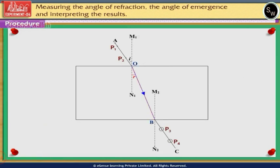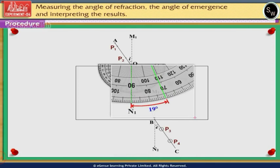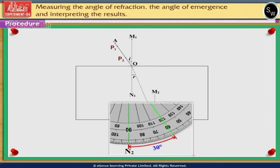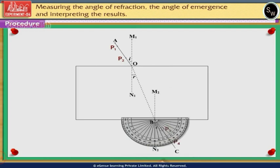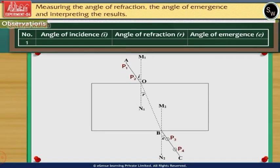Measure the angle of refraction r made by ray OB with the normal M1N1 at point O, and the angle of emergence e made by ray BC with the normal M2N2 at point B. The angle of refraction is 19 degrees and the angle of emergence is 30 degrees. Record the observations in the observation table: for an angle of incidence of 30 degrees, angle of refraction is 19 degrees and angle of emergence is 30 degrees.